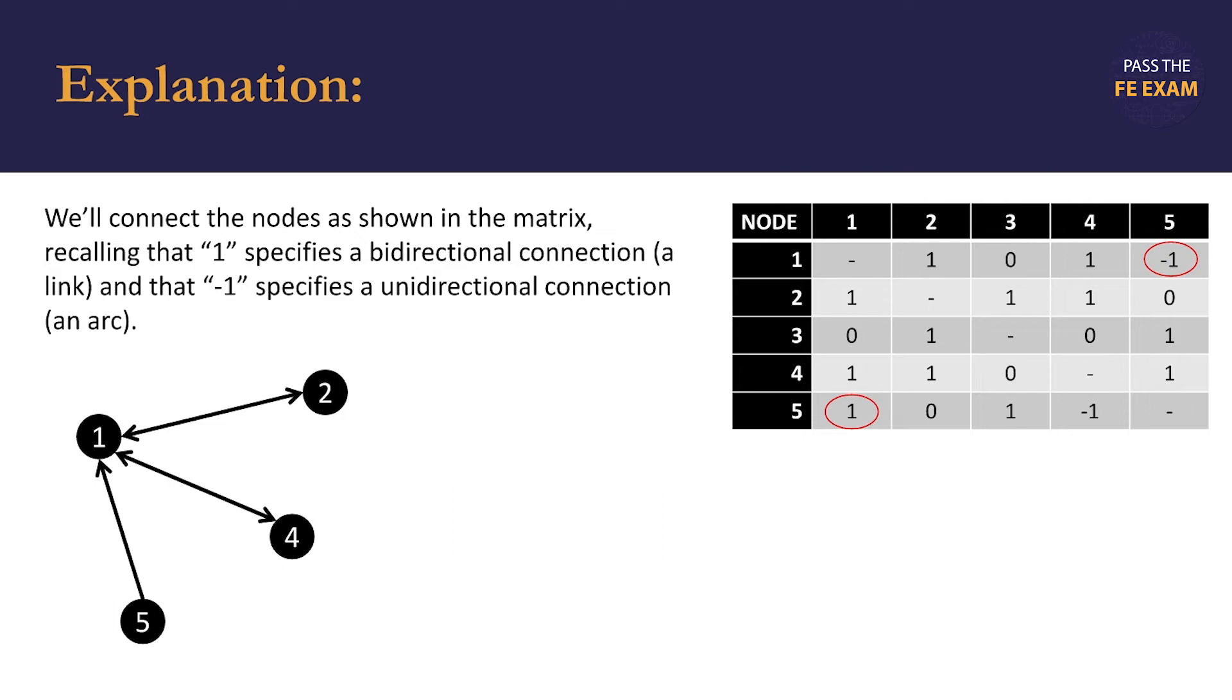Being done with node number one, we can move on to node number two. We see that it has a bidirectional connection to node number four already present on the map that we're drawing out. Node number two also has a link to node number three. That node doesn't exist yet on our map, so we will add it to the graphical representation.